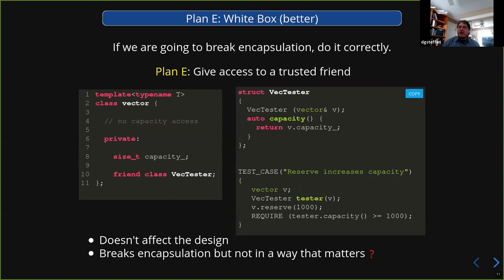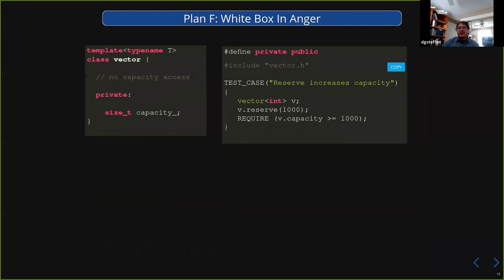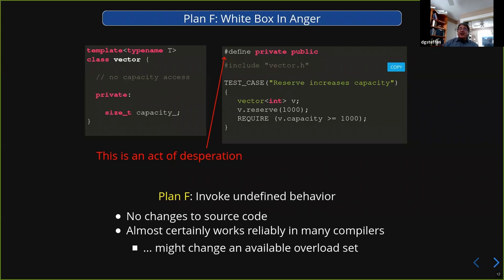But there are still cases where this doesn't work. If plan E goes down, you go to plan F: white box test in anger. You just give in and define 'private' as 'public' at the top of your unit test. This is an act of desperation — are we all clear that this is a bad idea? No one thinks this is good. You're invoking undefined behavior just immediately. But again, we're down to plan F — you've had all these other better things that haven't worked.